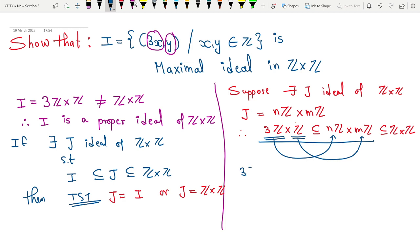So my 3Z is a subset of nZ. If my 3Z is a subset of nZ, from this I can conclude that my n divides this 3 and from this I can conclude that my m divides 1.